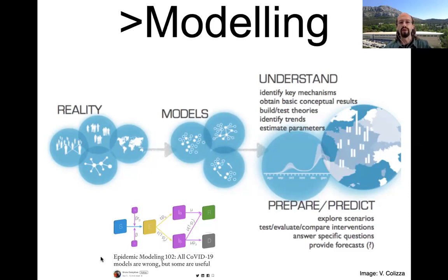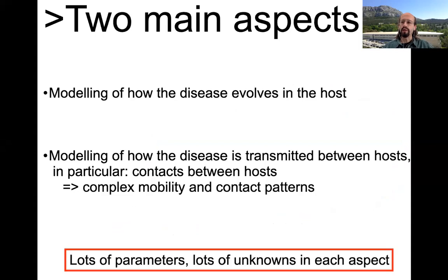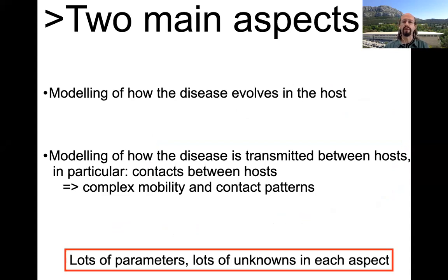There's a very nice blog by Bruno Bonsalves that takes up this issue that models are wrong but some are useful. In the issue of modeling infectious diseases, I'll talk about two aspects: first, how the disease evolves inside each individual host, and second, how it is transmitted between hosts — which means understanding mobility and contact patterns. In both aspects there are many things we don't know, many parameters, and many assumptions to be made.